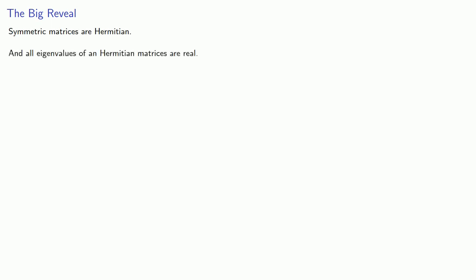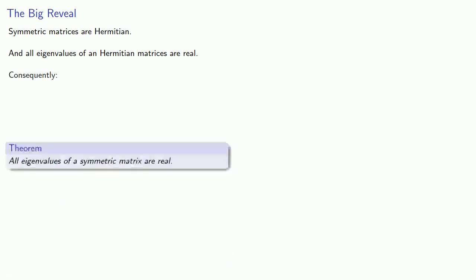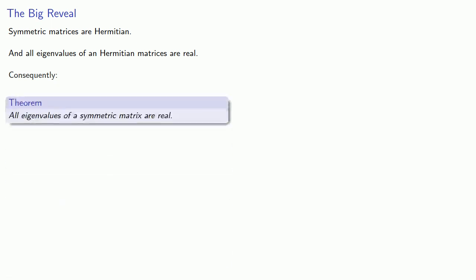And this leads to the big reveal: symmetric matrices are Hermitian, and we know that all eigenvalues of a Hermitian matrix are real. Consequently, all eigenvalues of a symmetric matrix are real.